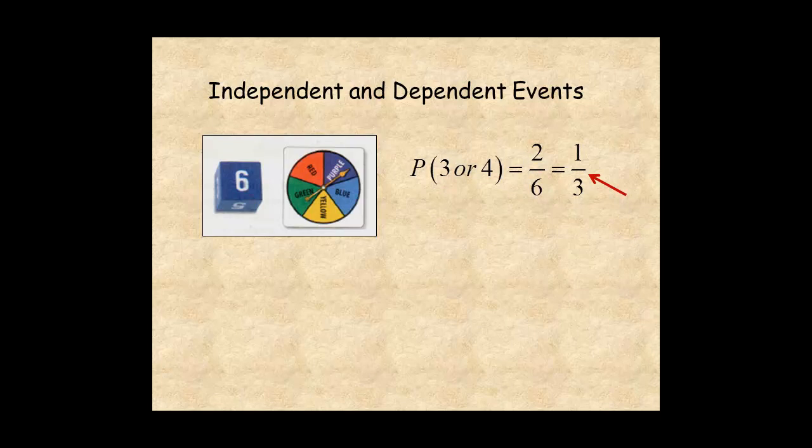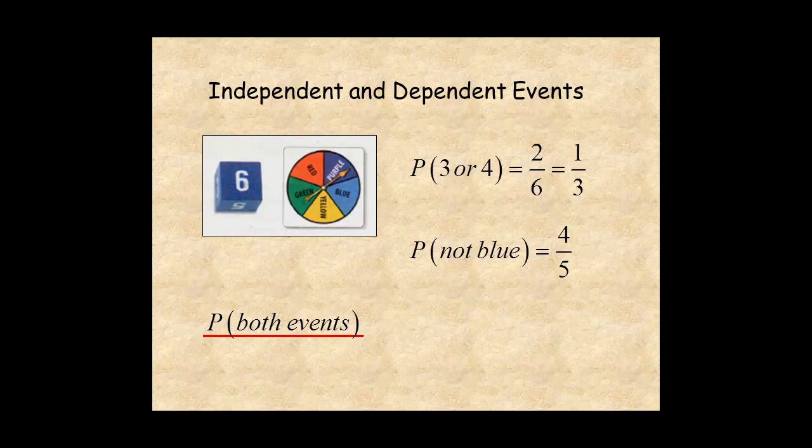The probability of not spinning blue is four over five. So the probability of both events is one-third times four over five, which is four chances out of 15, or about 27%.